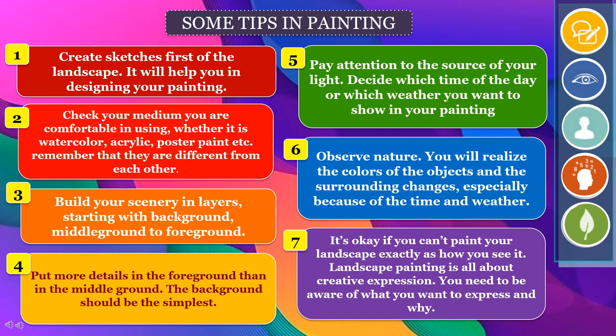4. Put more details in the foreground than in the middle ground. The background should be the simplest. 5. Pay attention to the source of your light. Decide which time of day or which weather you want to show in your painting. 6. Observe nature — you will realize the colors of objects and the surroundings change, especially because of the time and weather. 7. It's okay if you can't paint your landscape exactly as you see it. 8. Landscape painting is all about creative expression. You need to be aware of what you want to express and why.